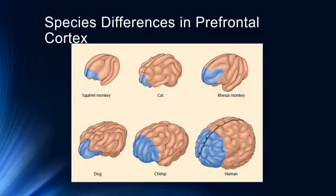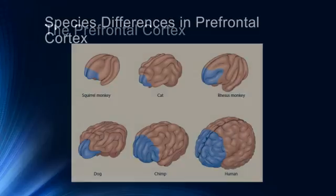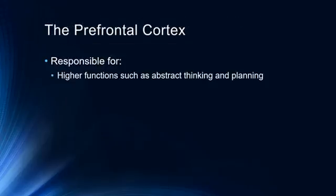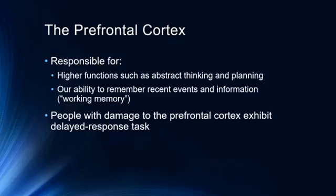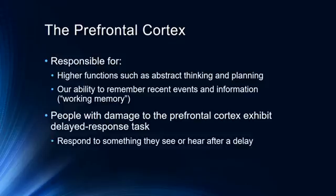The frontal lobe is one of the things that separates us from other species. Humans have a very large frontal cortex, particularly prefrontal cortex, compared to other species, which is one reason we appear to have greater intellectual abilities — it is responsible for planning and coordinating our future, abstract thinking, working memory, and remembering recent events. People with damage to the prefrontal cortex exhibit delayed responses to various tasks. The dorsolateral prefrontal cortex in particular is involved in working memory and cognitive functions, and is susceptible to damage in traumatic brain injury cases.